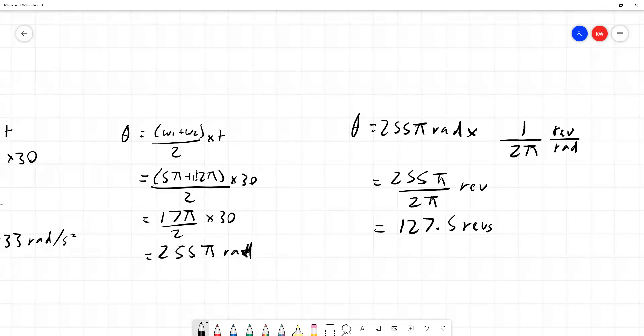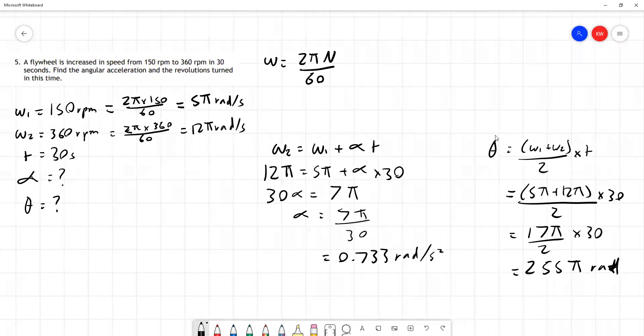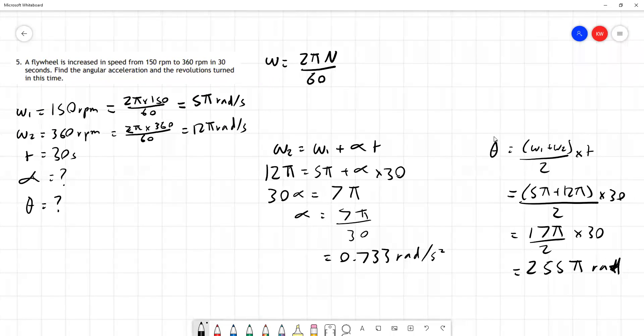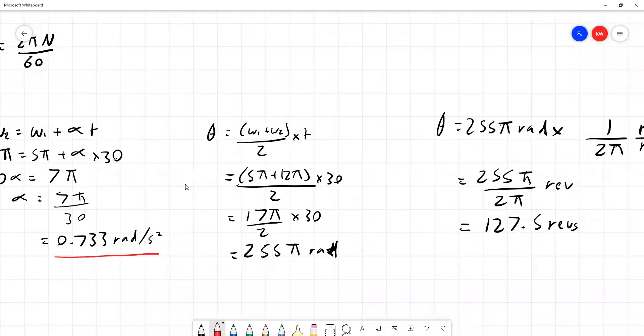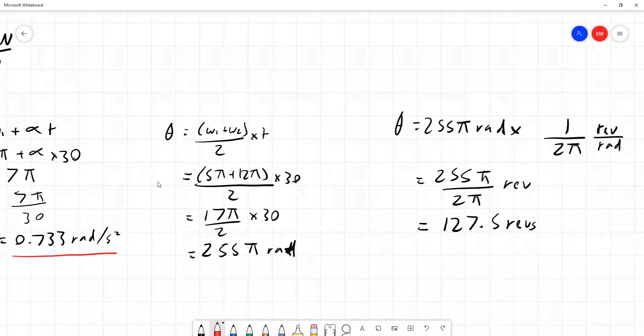That's what the question asked us to do. We were asked to find the angular acceleration and we found that was 0.733 radians per second squared. We were asked to find the number of revolutions turned in the time and it was 127.5 times around the flywheel in that 30 second period. That concludes the question.